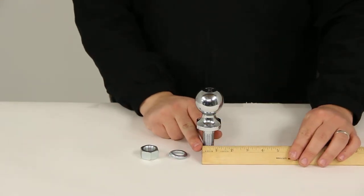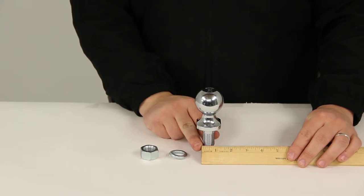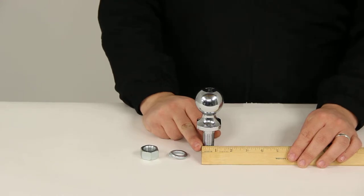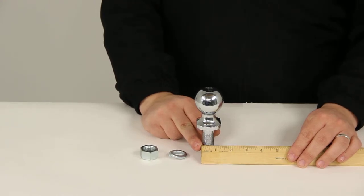The diameter of our shank is going to measure 3/4 inches. So in selecting a ball mount, you need to make sure that it has a ball hole diameter of at least 3/4 of an inch.